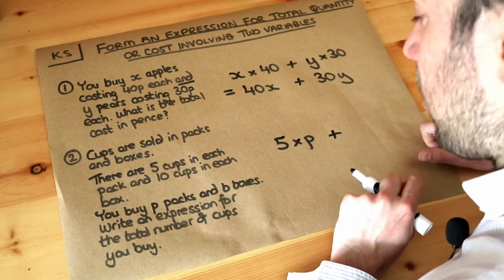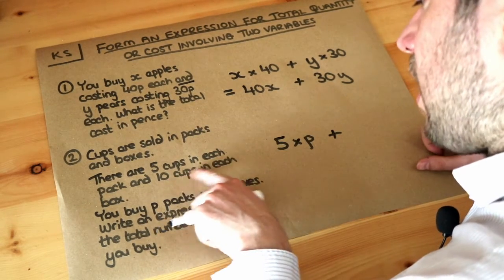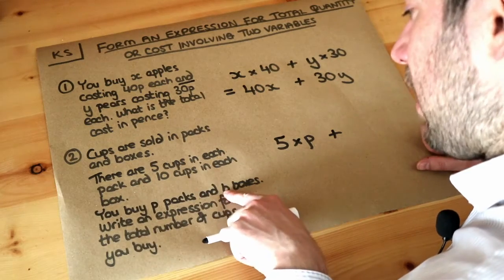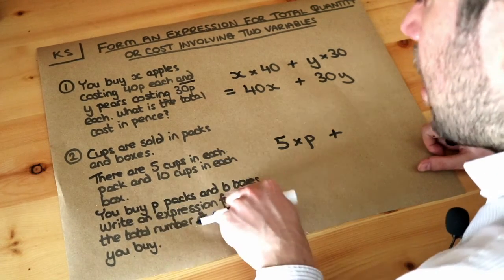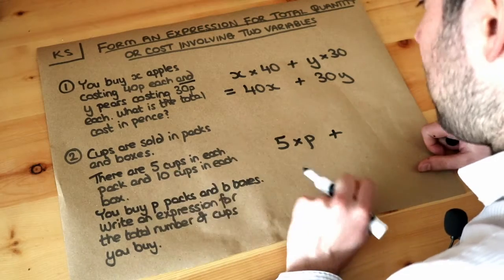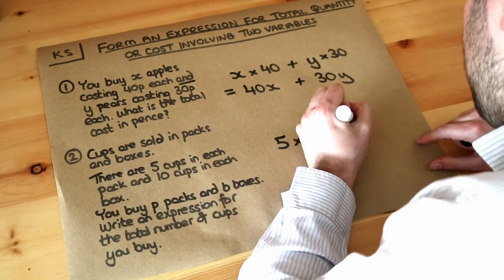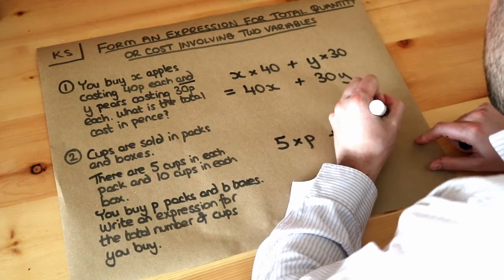We've got 10 cups in each box and you've got b boxes. If there were three boxes you just do three times 10, but because we've got b boxes we do b times 10 or 10 times b. It's the same thing, isn't it? b times 10 is the same as 10 times b.